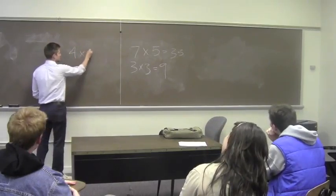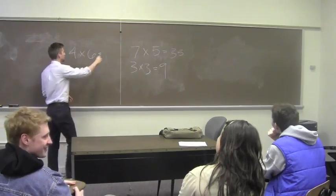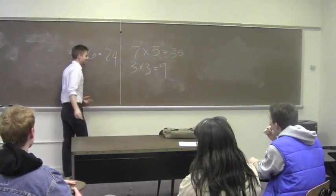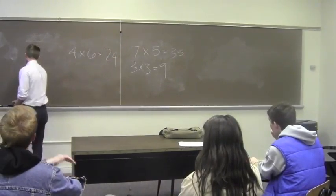Four times six equals? Twenty-four. Alright, this is silly. We all know this. These are multiplication problems. What am I doing? You guys are on top of it.